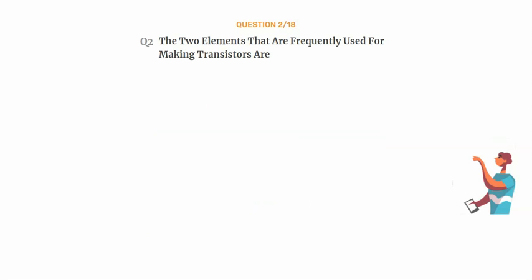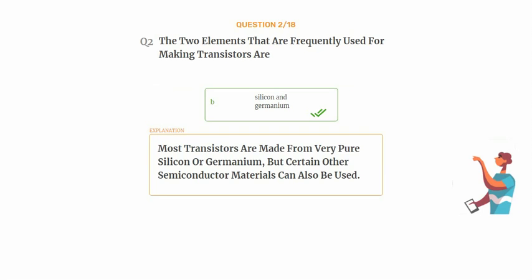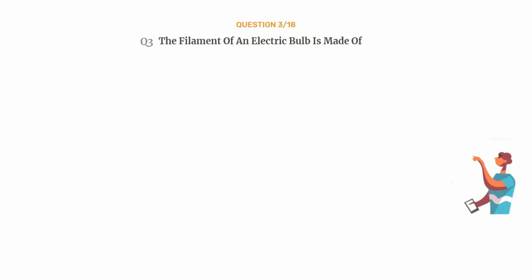Question number two: the two elements frequently used for making transistors are — option A: boron and aluminium, option B: silicon and germanium, option C: iridium and tungsten, option D: niobium and columbium. The correct answer is option B: silicon and germanium. Most transistors are made from very pure silicon or germanium, but certain other semiconductor materials can also be used.